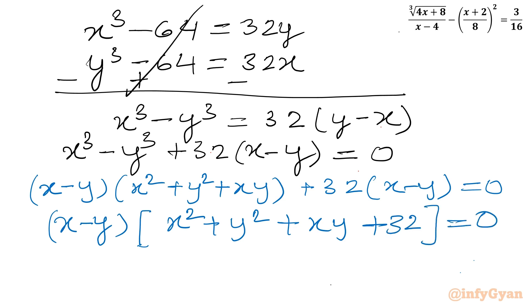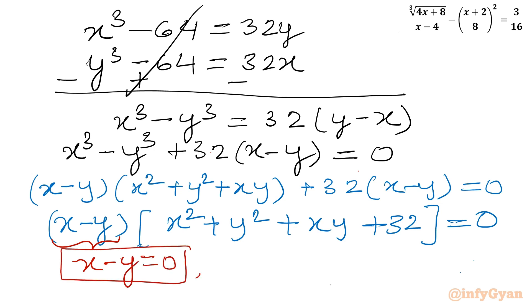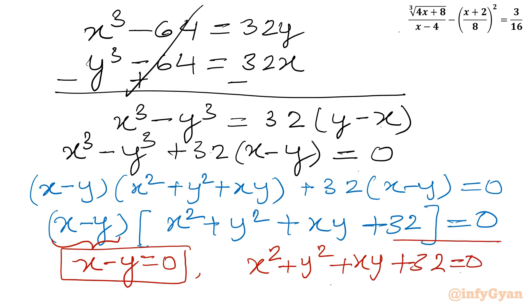So I will conclude two statements from here. First: x minus y equals zero. Second equation: x² + y² + xy + 32 equals zero. Let's solve both equations.